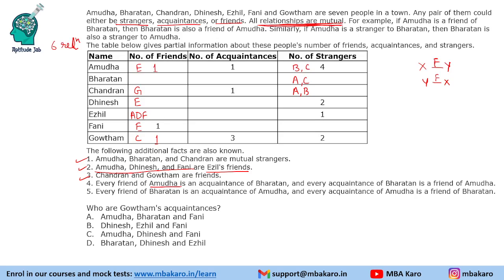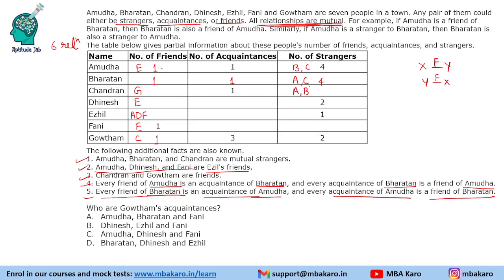Now, every friend of Amudha is an acquaintance of Bharatan, and every acquaintance of Bharatan is a friend of Amudha. That means if Amudha has one friend, that friend will be an acquaintance of Bharatan. And if Bharatan has X acquaintances, Amudha will have X friends. So we get the number one here — one friend of Amudha, that one person is also the acquaintance of Bharatan. Similarly, every friend of Bharatan is an acquaintance of Amudha and vice versa, giving Bharatan four strangers. Every friend of Amudha is an acquaintance of Bharatan, so Bharatan has E as an acquaintance, and by mutual logic, Bharatan will be an acquaintance of Ezil.